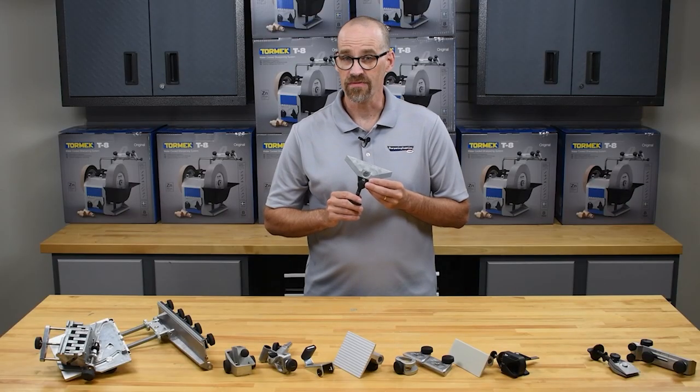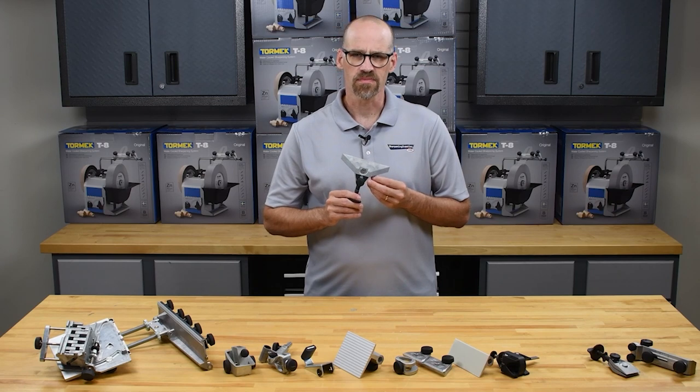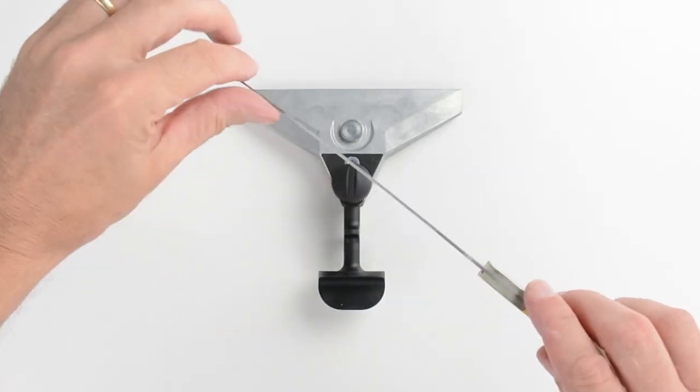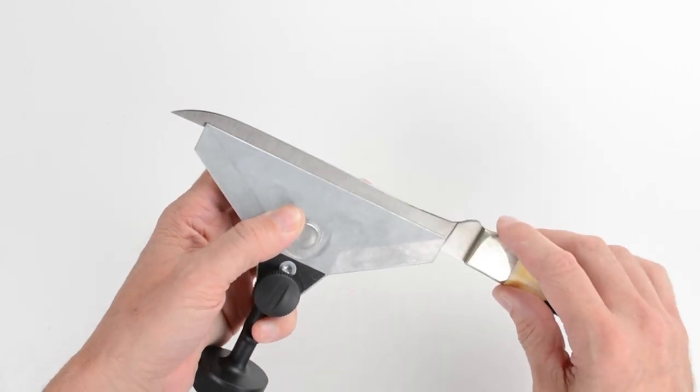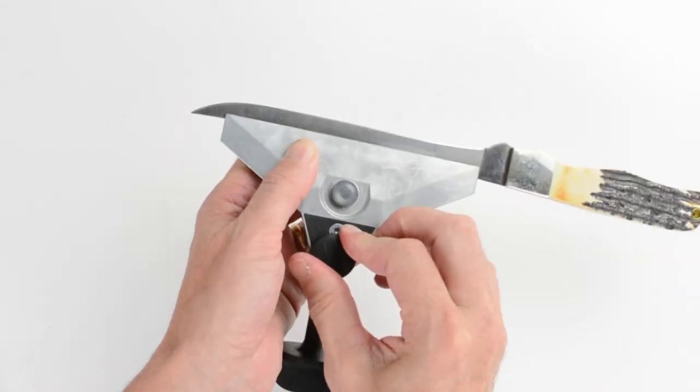The KJ140 Long Knife jig handles knives with especially long or flexible blades. Insert the knife into the jig. The distance between the jig and the edge of the knife should be the same on both sides.